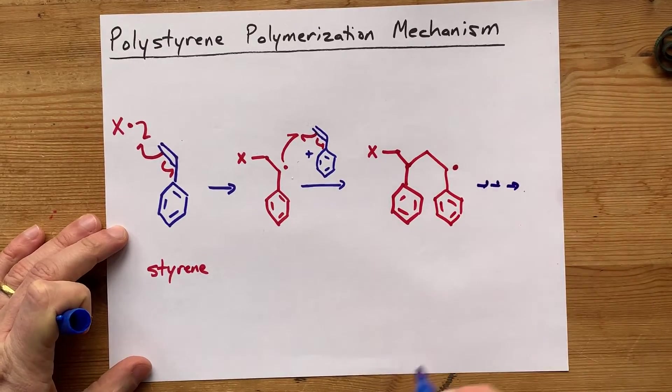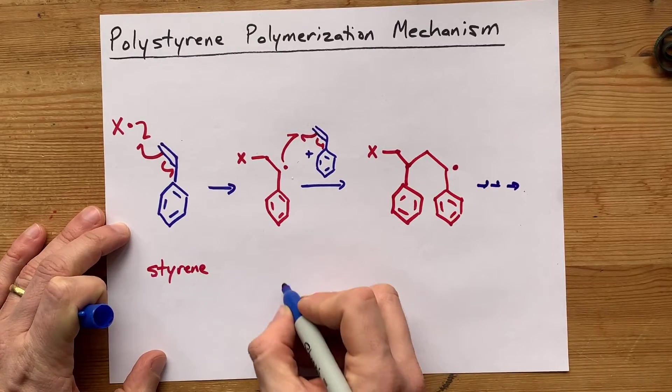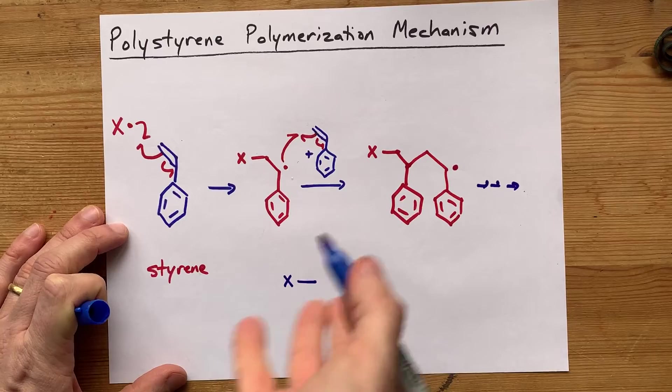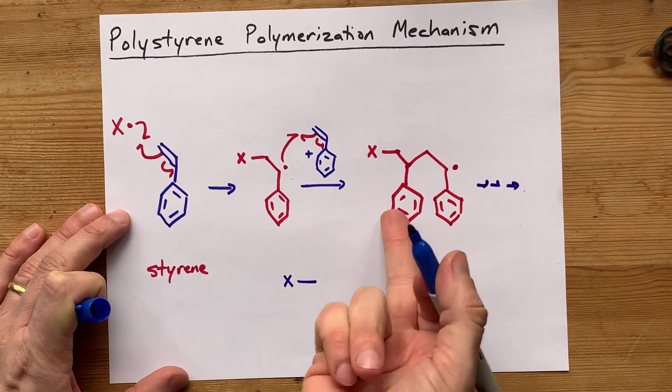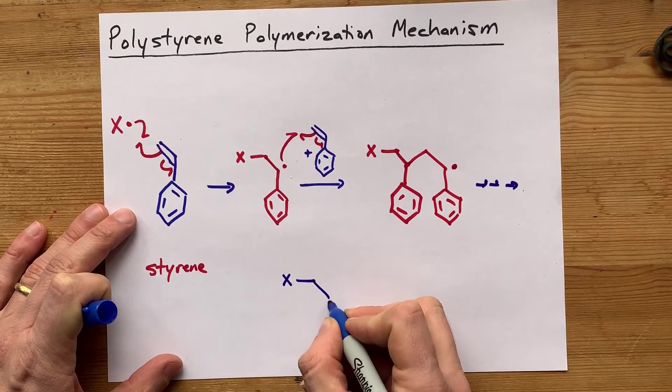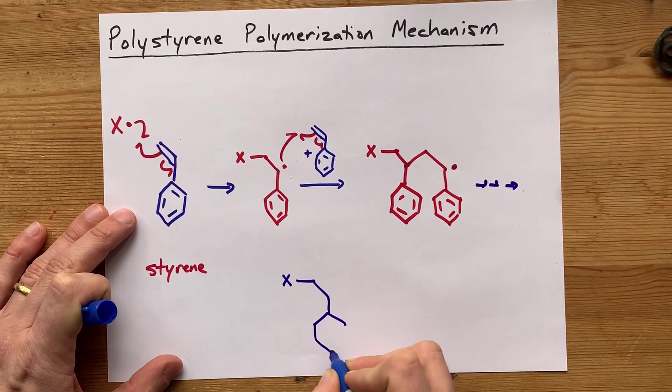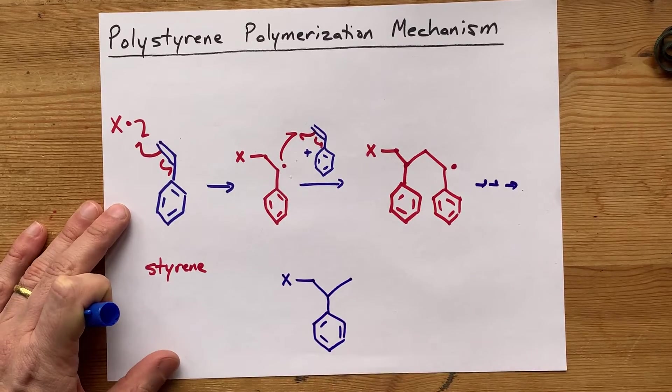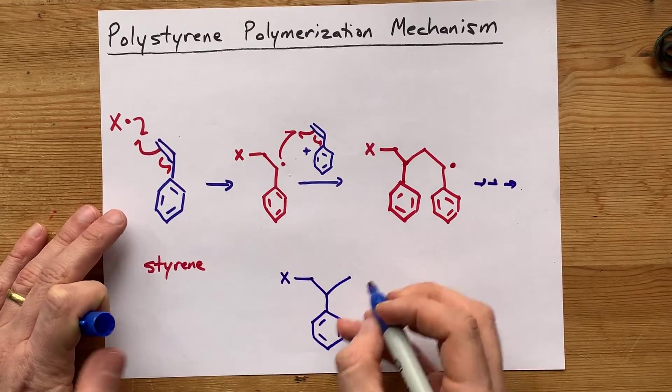But if you repeat and repeat and repeat, you'll end up with that X. And again, that X really doesn't matter what it was in the beginning. What matters is that you have a thousand styrenes all connected to each other. I'm going to draw this benzene for you, along with the bond to the next styrene, etc., etc.